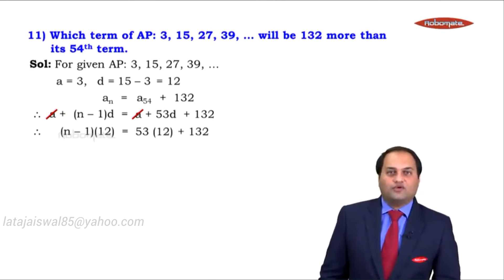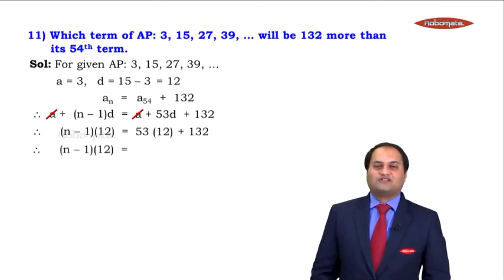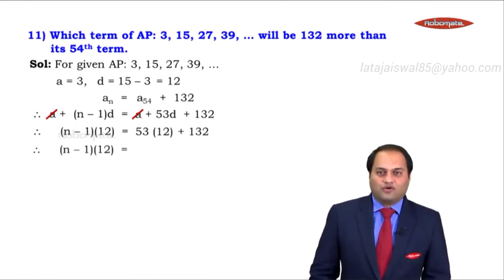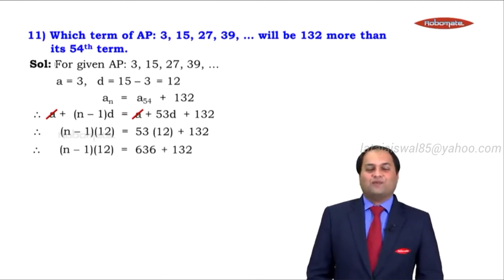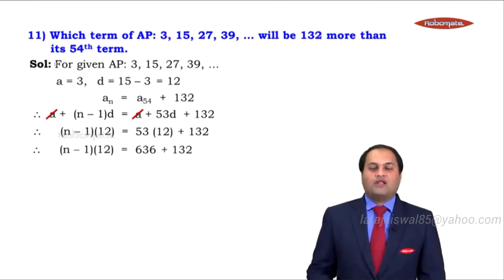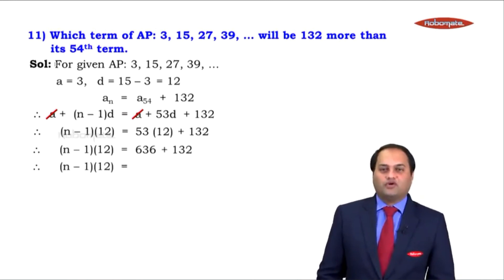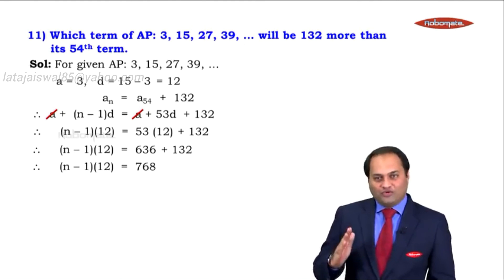Let's do the calculations now. (n minus 1) into 12, 53 into 12 is 636 plus 132. Let's move on. (n minus 1) into 12 is equal to 768.